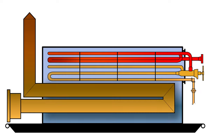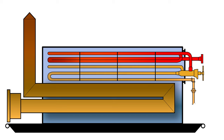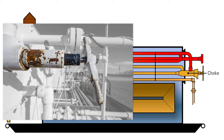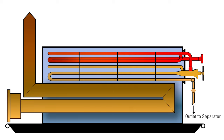The GPU will preheat the well stream before it comes to the choke, which is where the pressure drop and corresponding temperature drop take place. The well stream is then heated and allowed to expand prior to entering the separator for further processing.